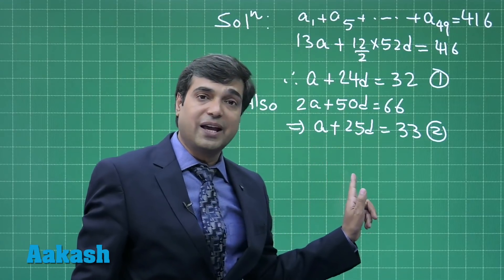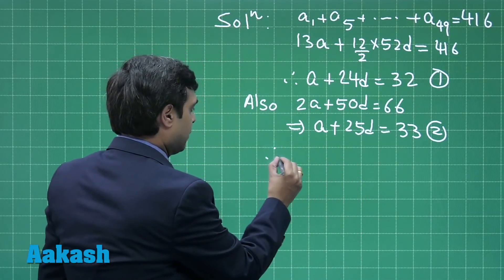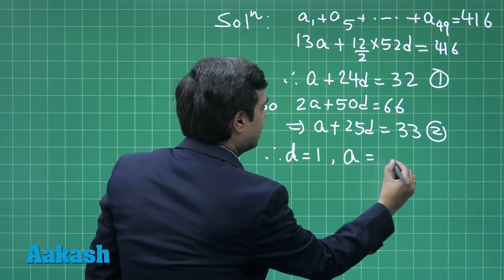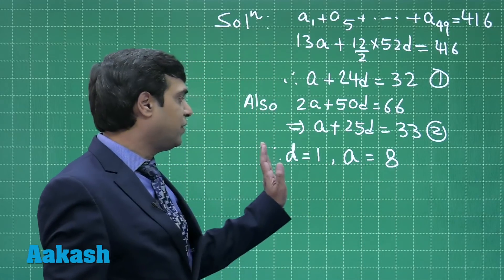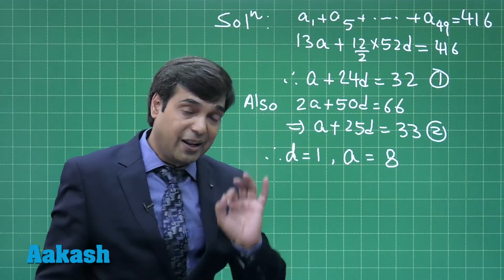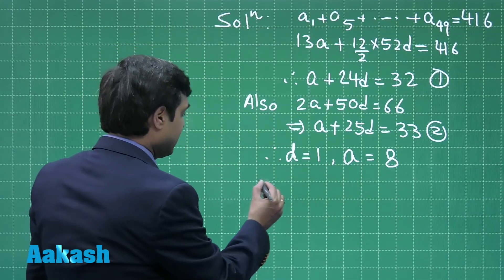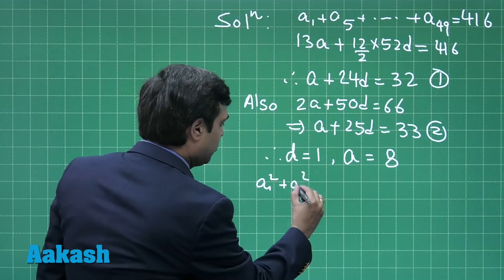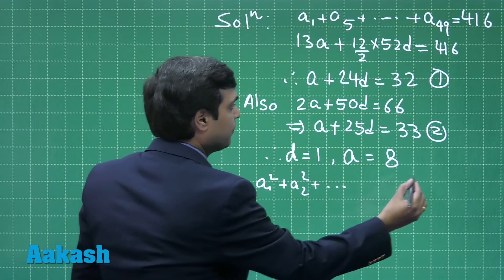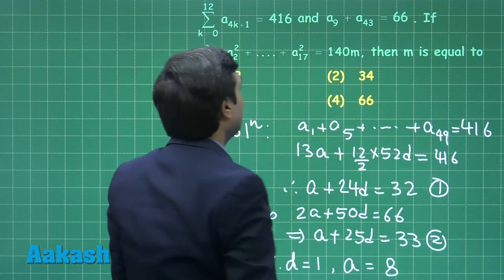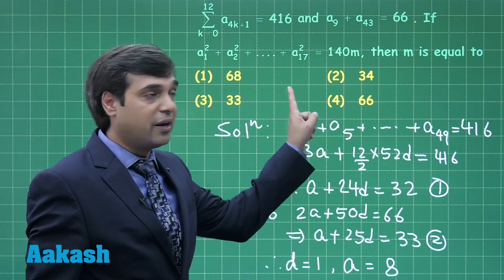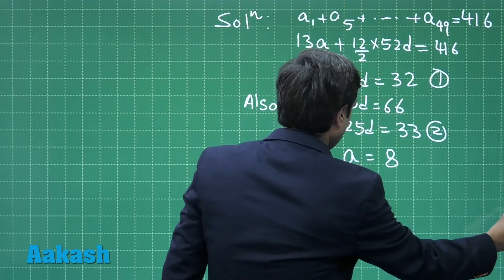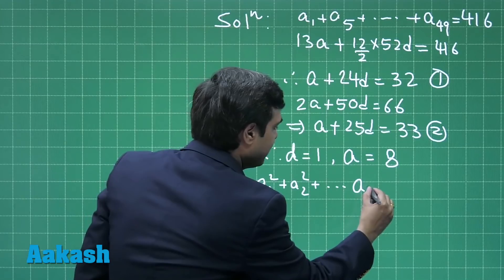clearly see d comes as 1 and a is 8. So the value of d and a are obtained. Another equation given to us as a₁² + a₂² and so on, we can see in the given question up to a₁₇² = 140m. So write here up to a₁₇²